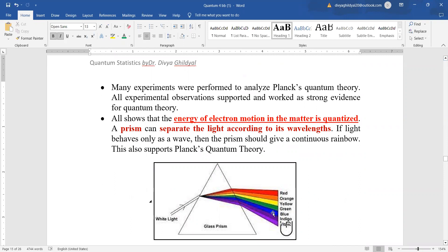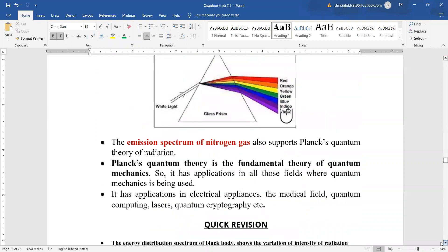Experimental proof is prism. Experimental proof is laser. Experimental proof is emission spectrum of nitrogen gas. Thank you.